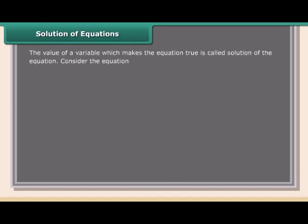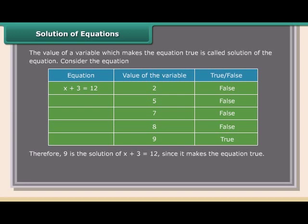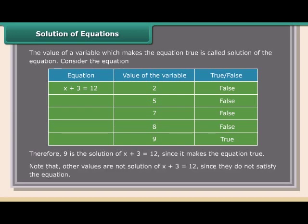Solution of equations: The value of a variable which makes the equation true is called the solution of the equation. For example, 9 is the solution of x + 3 = 12 since it makes the equation true. Note that other values are not solutions of x + 3 = 12 since they do not satisfy the equation.